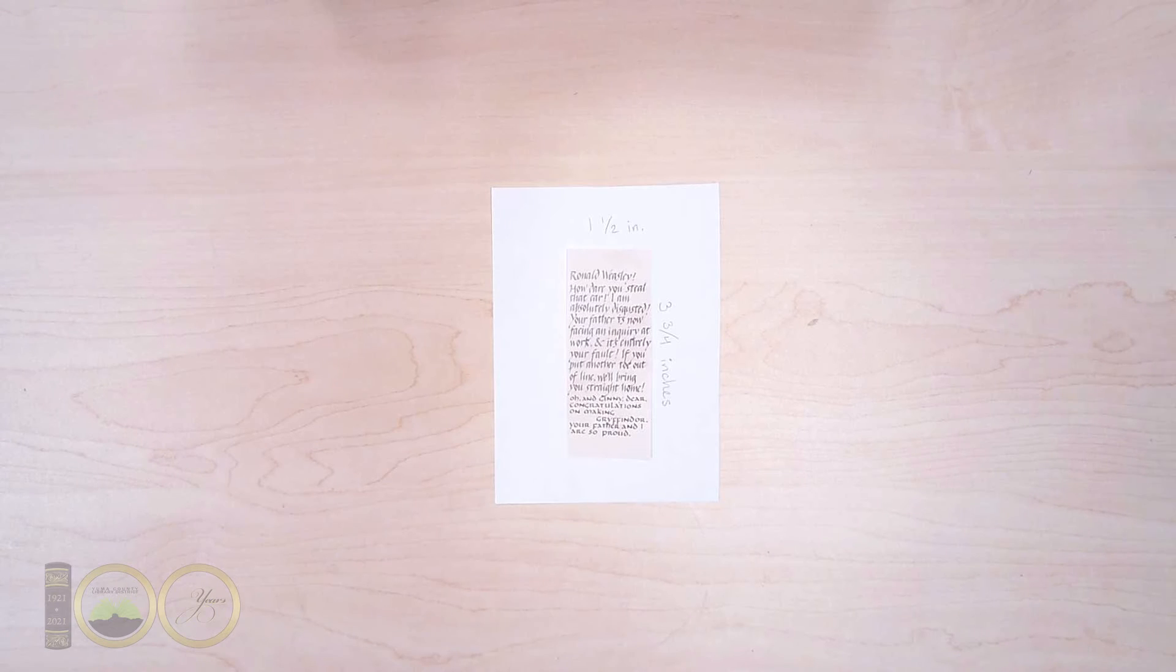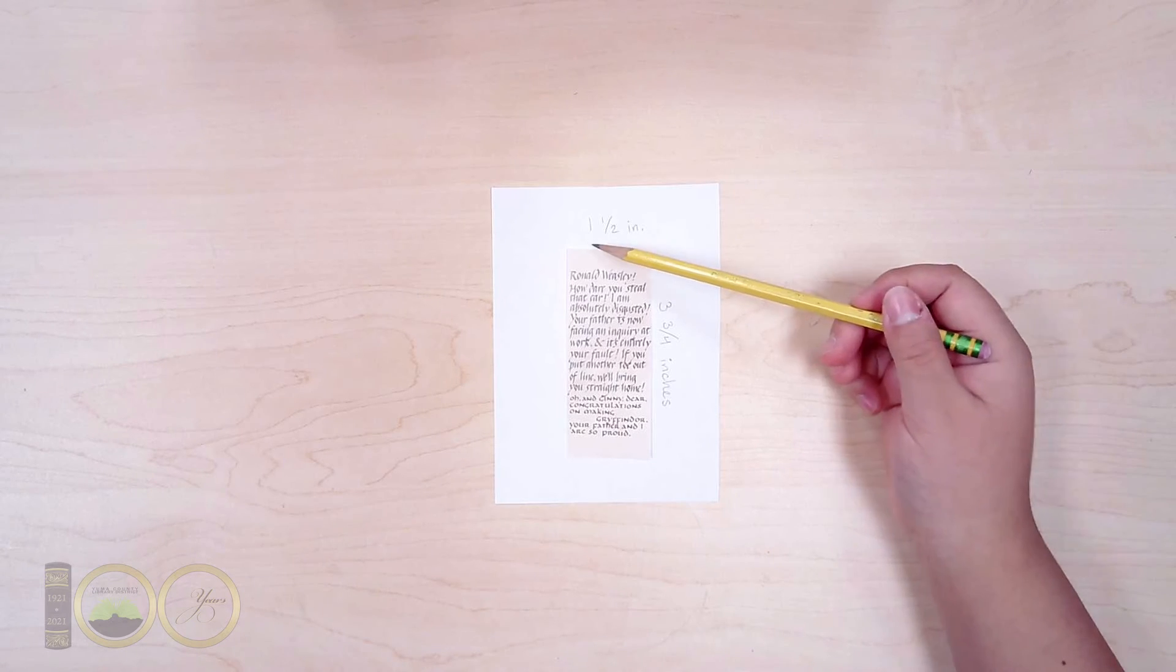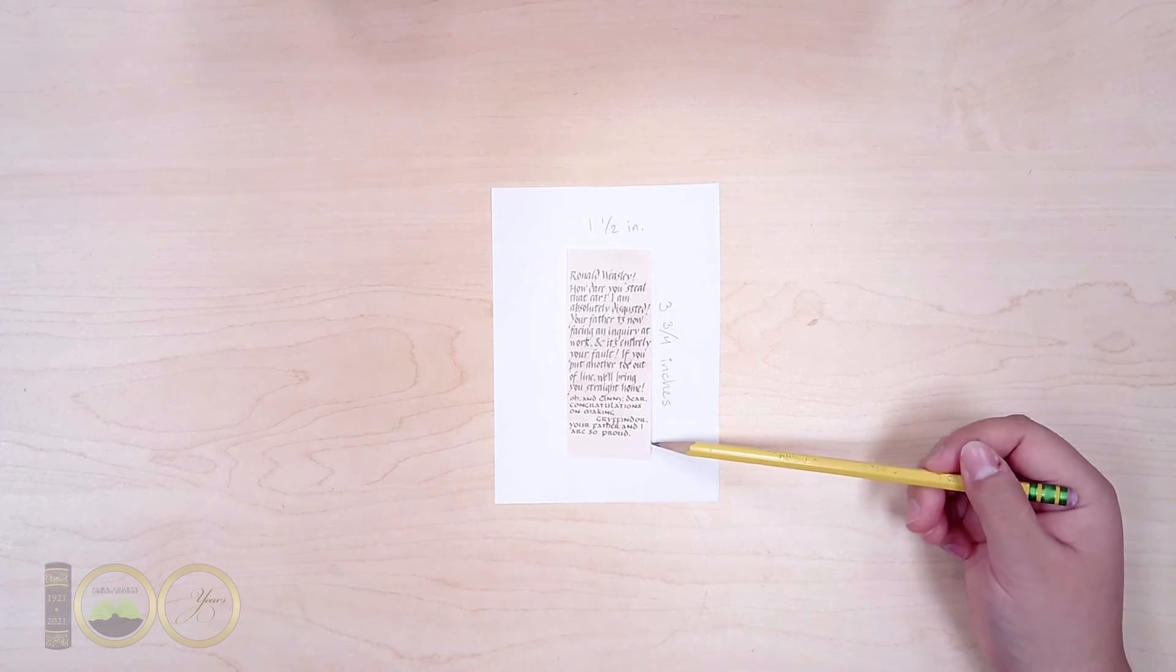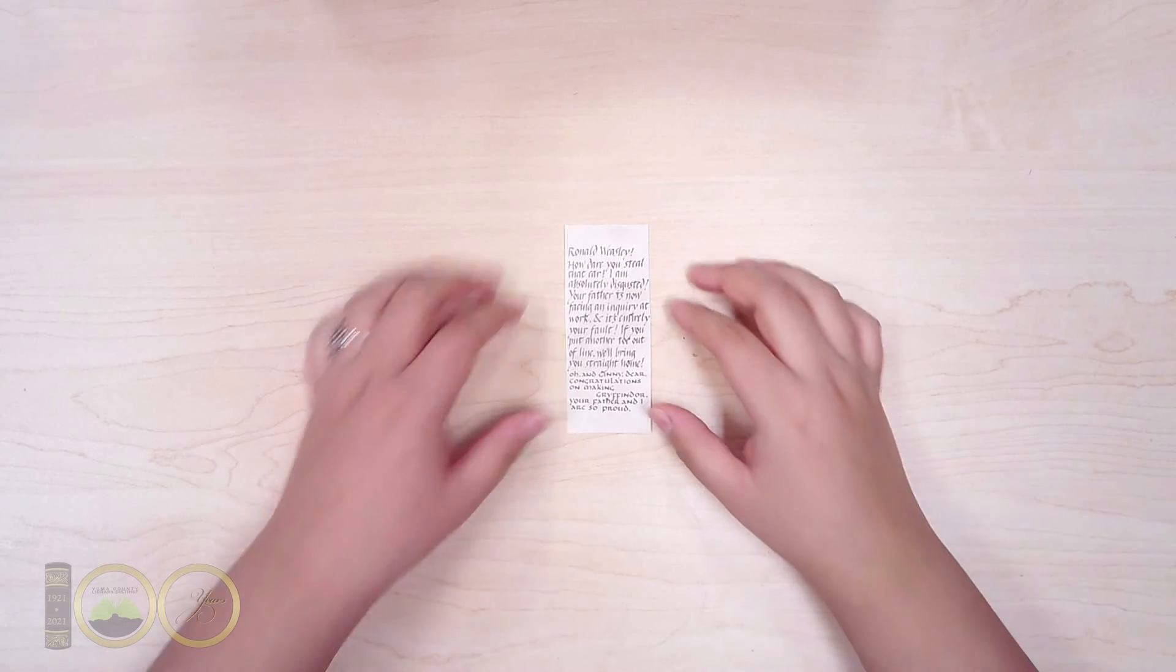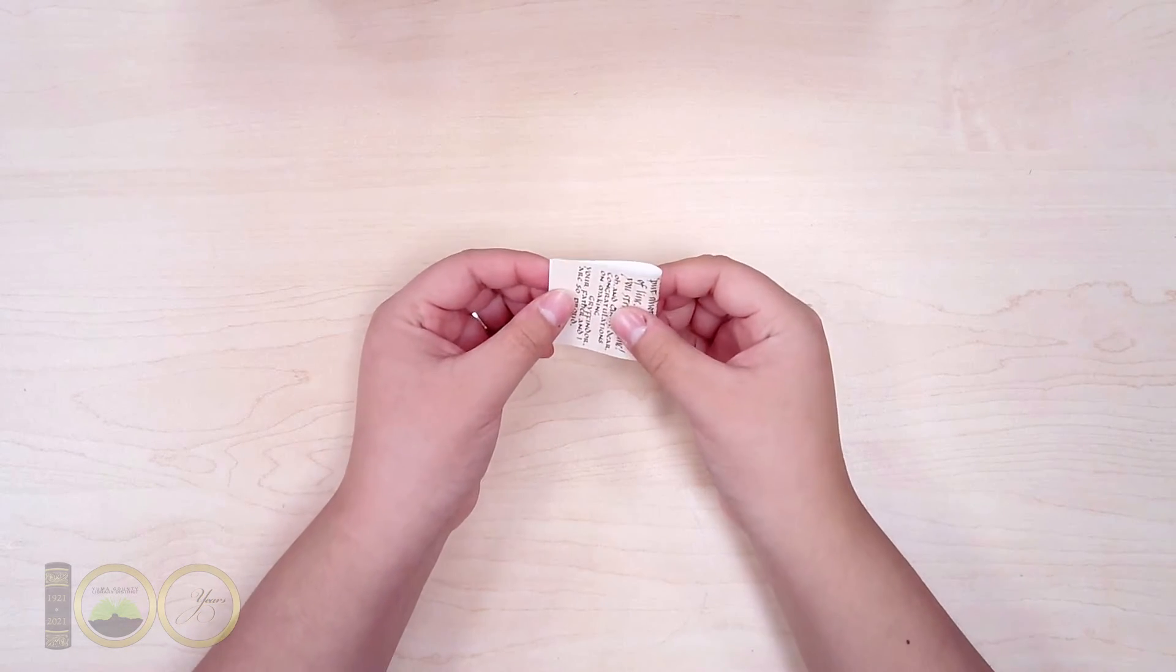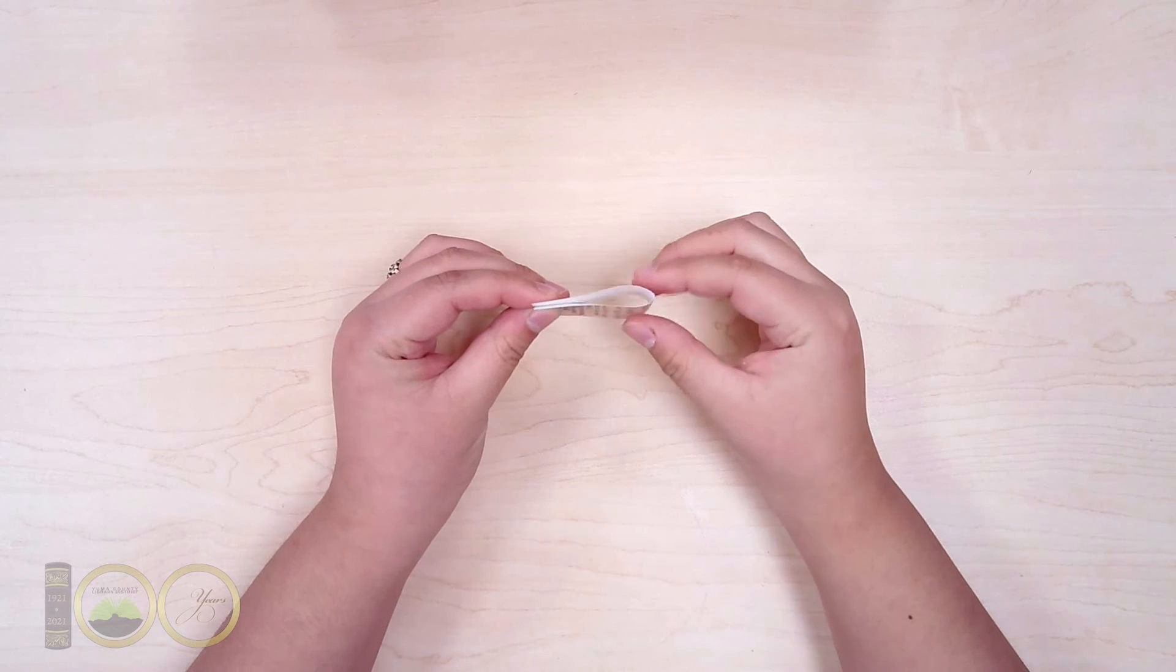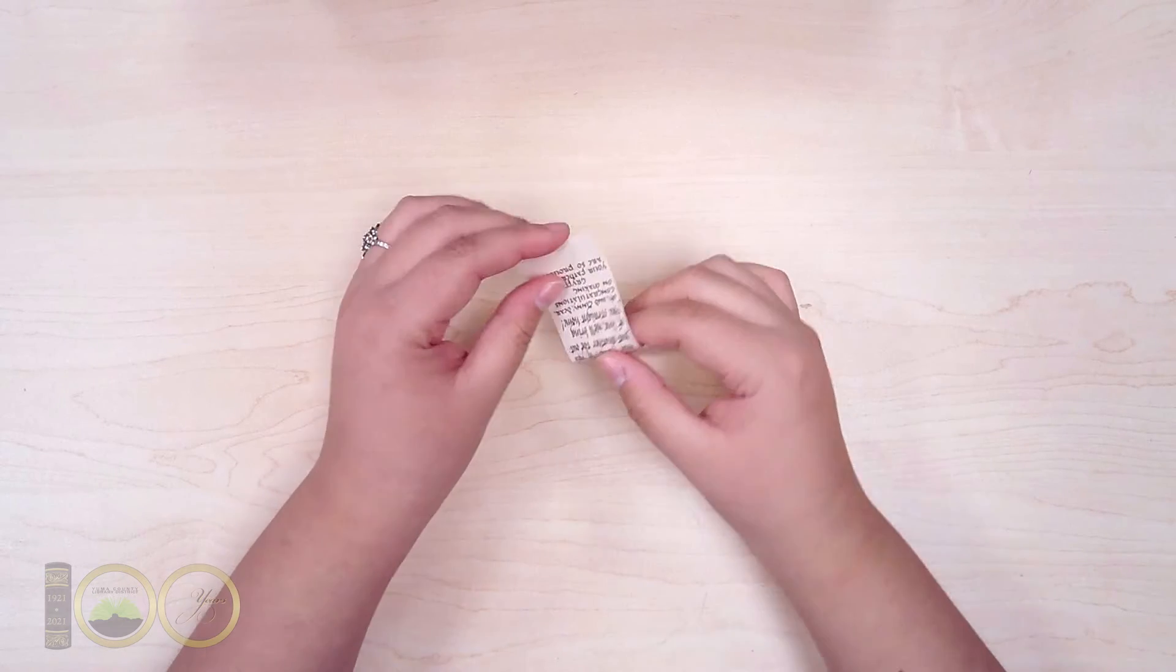On the white paper, either find the letter contents on the internet and print it out, or measure a three and three-fourth inch by one and a half inch rectangle to write the letter contents by hand. Leave about a half inch of blank space above the written words. If you are printing it out, make sure the size of the letter contents rectangle is also the same as mentioned before. Lightly crease the paper into a W shape to force the paper to appear like a flowy scroll.